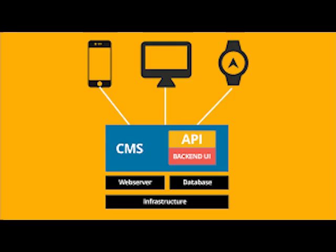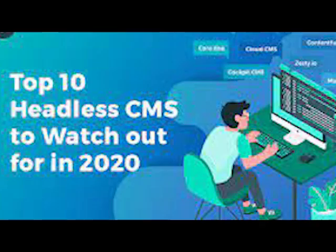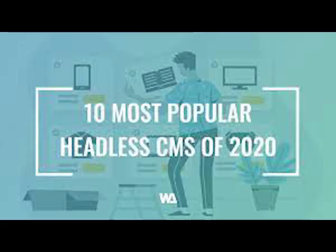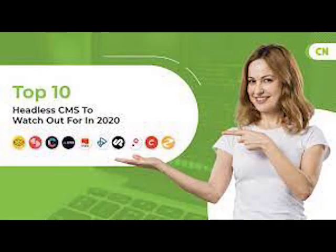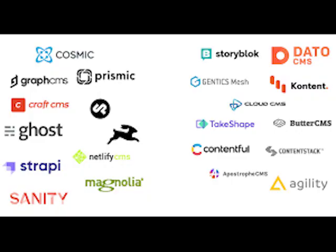Sanity.io is an industry-leading headless CMS trusted by clients like Nike, National Geographic, Sonos, Figma, and Netlify. Flexibility is at the core of Sanity. Developers can customize the editing environment using JavaScript and React, and easily integrate the back-end with powerful APIs and rich data modeling capabilities. It comes with live previews, real-time collaboration, and full version history out-of-the-box, scaling with your company's needs on secure and compliant cloud infrastructure. Sanity starts free with no credit card required.